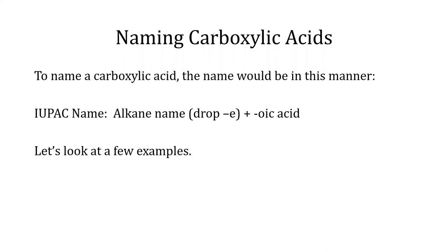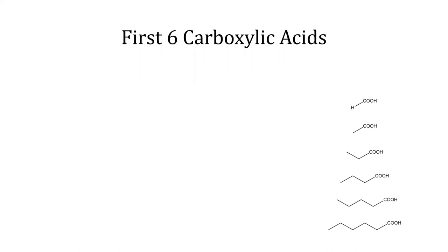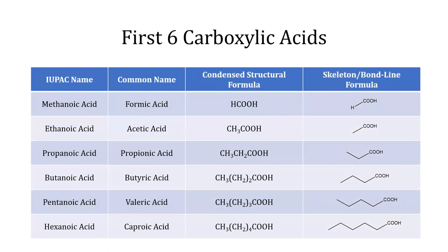Let's look at a few examples. This table shows the IUPAC name, common name, condensed structural formula, and skeleton formula for the first six carboxylic acids. A one-carbon carboxylic acid has an IUPAC name of methanoic acid and a common name of formic acid. A six-carbon carboxylic acid has an IUPAC name of hexanoic acid and a common name of caproic acid.